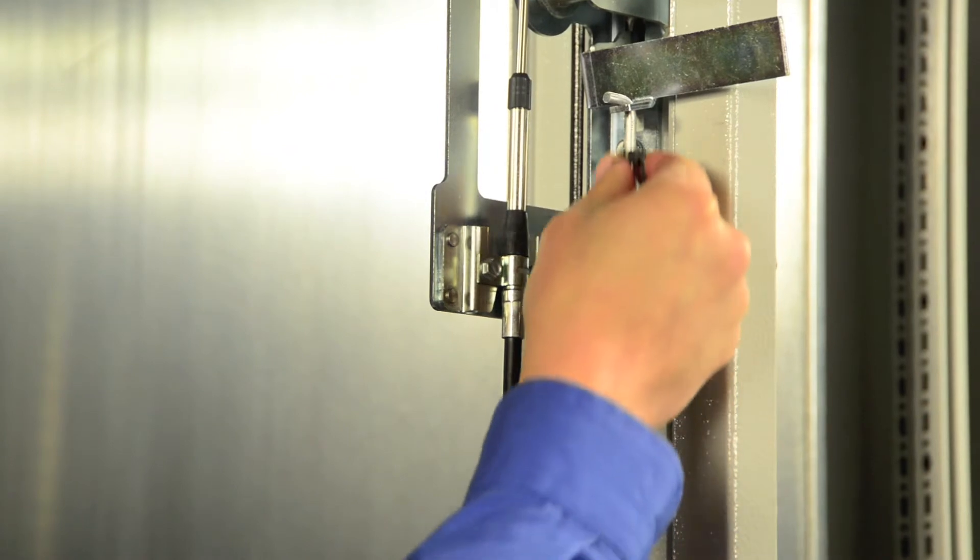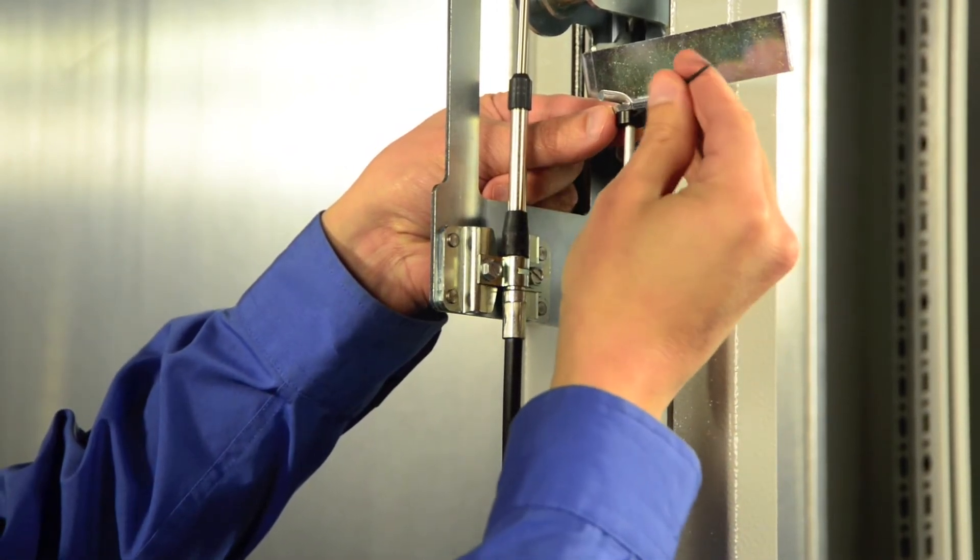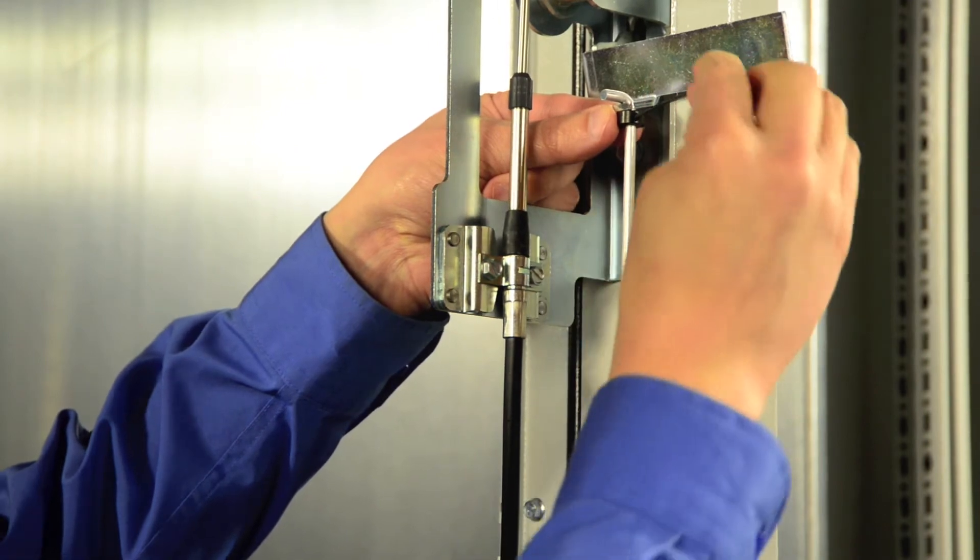With the connecting rod in place, position the upper collet just below the defeater lever and tighten using the supplied 1.5 mm hex key.